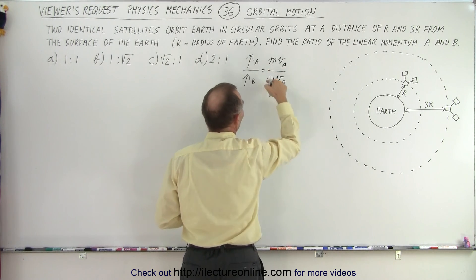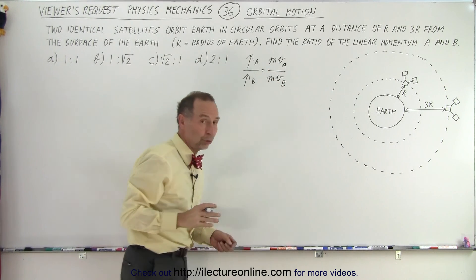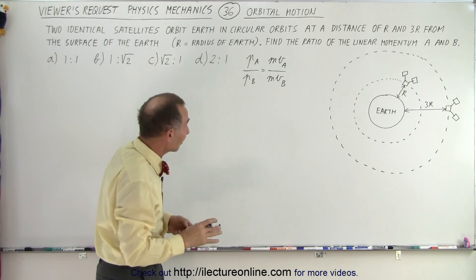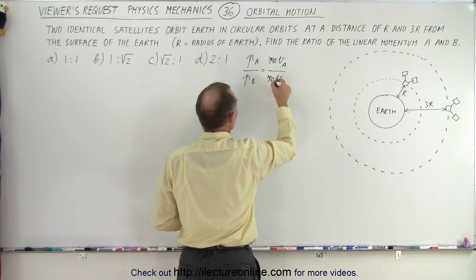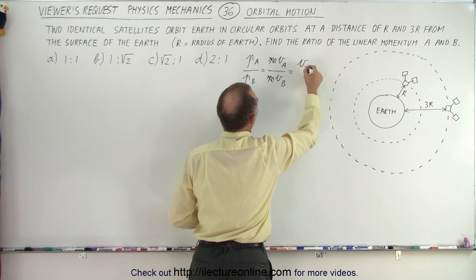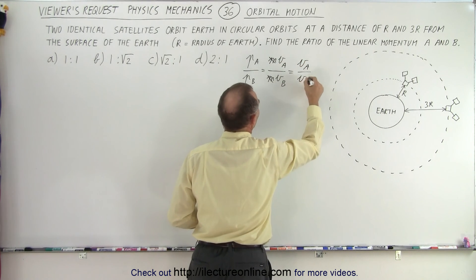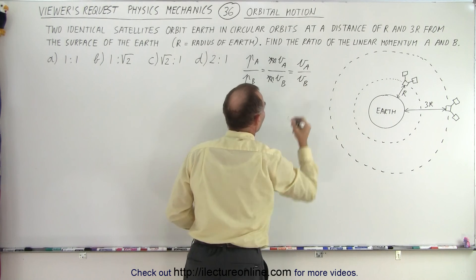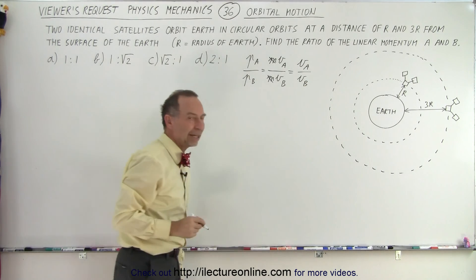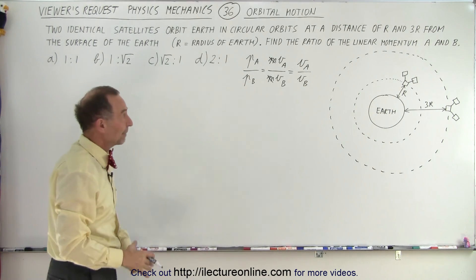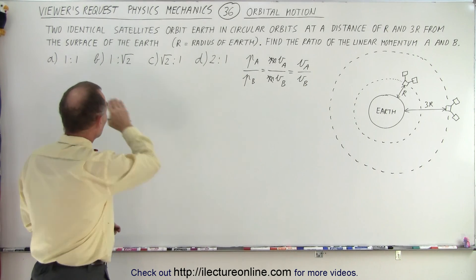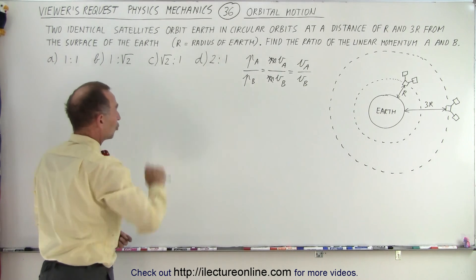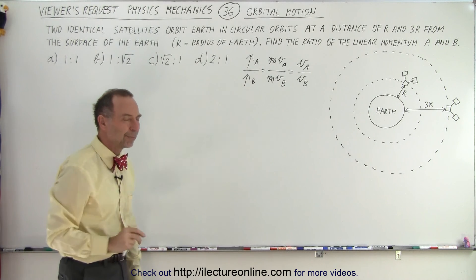Since they're identical satellites, they must have the same mass. So essentially, they want us to find the ratio of the velocity of A and the velocity of B. That's essentially what they're asking us to do, and one of those four answers should be correct.